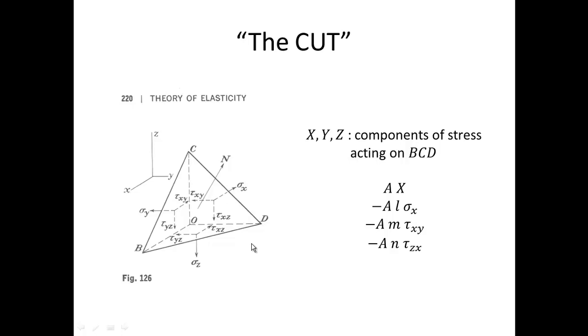So a corresponding force balance equation for the tetrahedron in the x direction could be just simply summing up those four forces and setting them equal to zero.